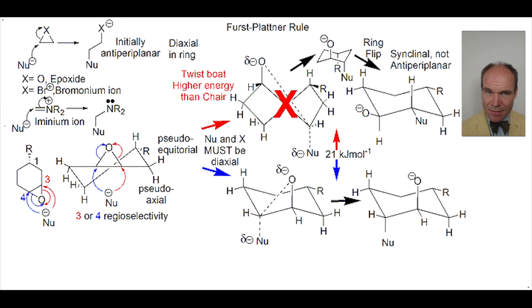But the carbon 3 nucleophilic attack, twist-boat, is 21 kilojoules per mole higher in energy than the carbon 4 nucleophilic attack chair. So, the carbon 3 nucleophilic attack, twist-boat, will not form.